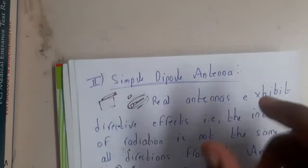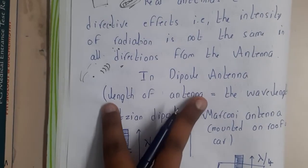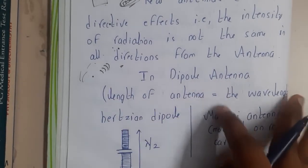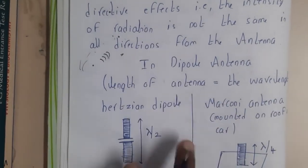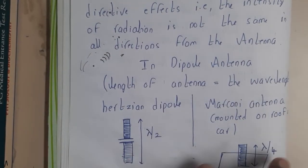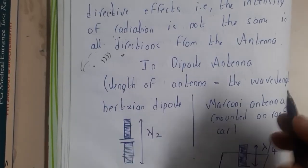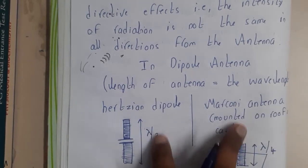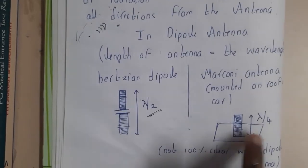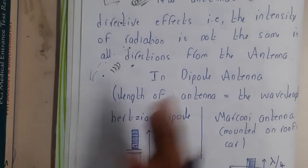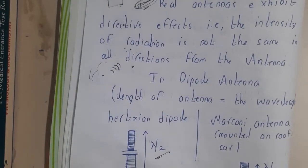The length of the antenna has a relation to the wavelength. The length of the antenna equals the wavelength — whatever the length, that is the wavelength you can connect to. The dipole antenna comes in two popular types: the Hertzian dipole (lambda/2 length) and the Marconi antenna (lambda/4 length). The relation to wavelength is the main thing to remember.